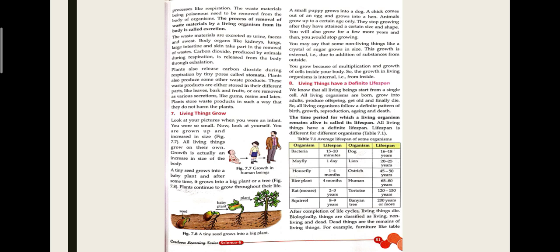The skin removes waste through sweat. The kidneys help in filtration and urine formation. The lungs and large intestine help in removal of faeces and other waste. Carbon dioxide produced by animals during respiration is released from the body through exhalation — the lungs help in the exchange of gases. We inhale O₂ and exhale CO₂, which is also a waste material of our body.